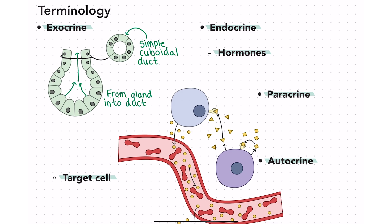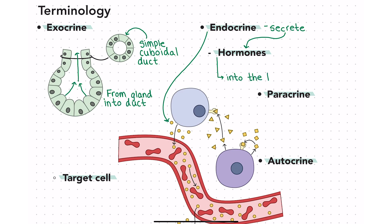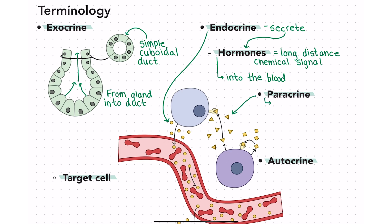There are a few different categories of glands that do not secrete into ducts. The first, and the focus of this series, is endocrine glands. Endocrine glands secrete hormones directly into the blood. A hormone, by definition, is just a long-distance chemical signal. In addition to endocrine glands, there are also paracrine glands — these secrete their product and it travels locally to act on neighboring cells.